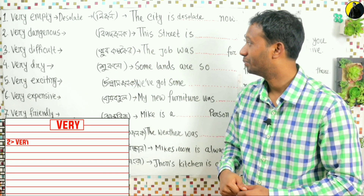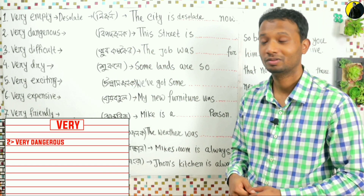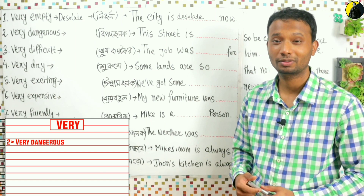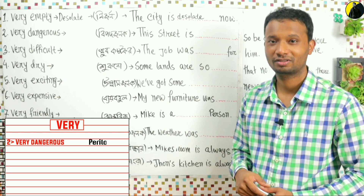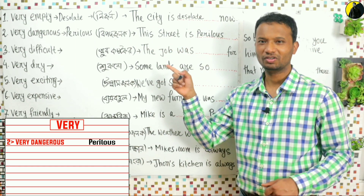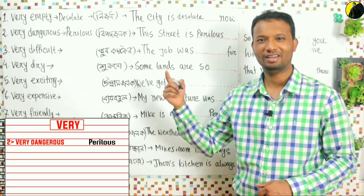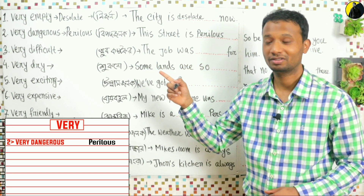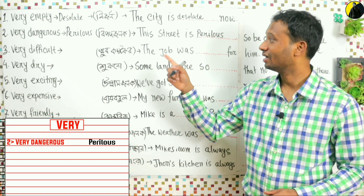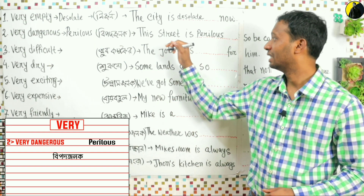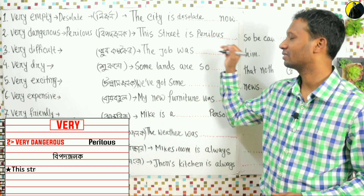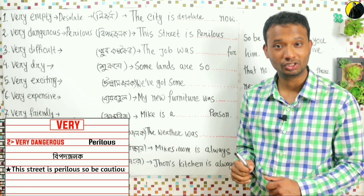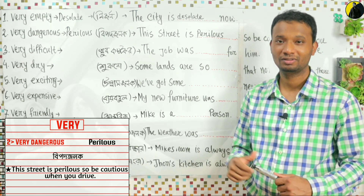Very dangerous — meaning very risky. The advanced synonym is: perilous. Repeat after me: perilous. P-E-R-I-L-O-U-S. Very dangerous — the advanced synonym is 'perilous'. For example: 'This street is perilous, so we have to be cautious when you drive.'